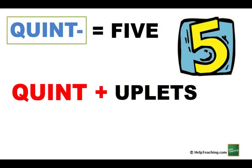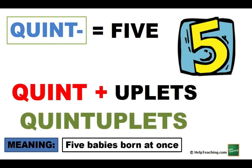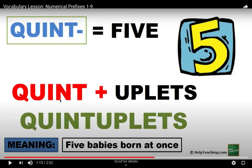Quint, meaning five. Quintuplets, meaning five babies born at once. Did you know there's such a thing? You can get pregnant and have five babies all at once.